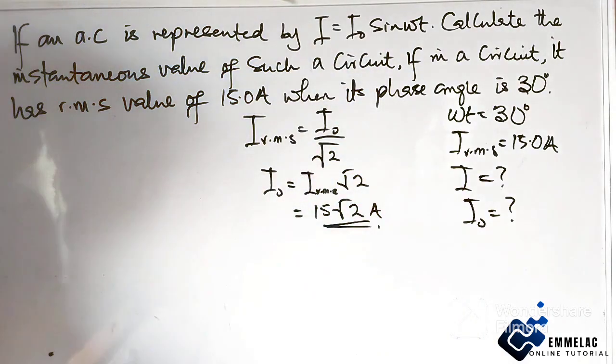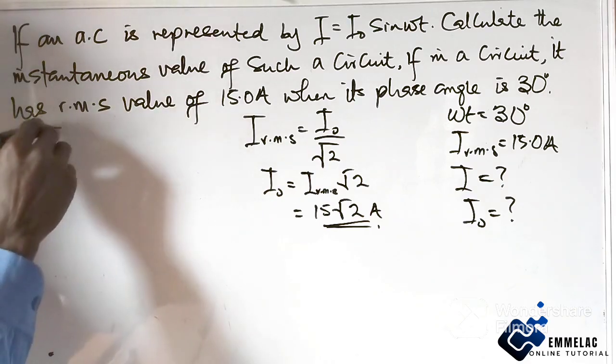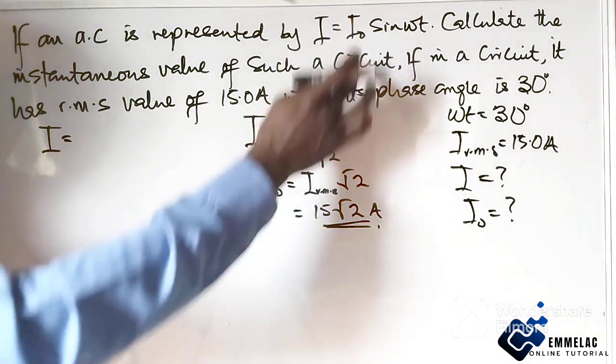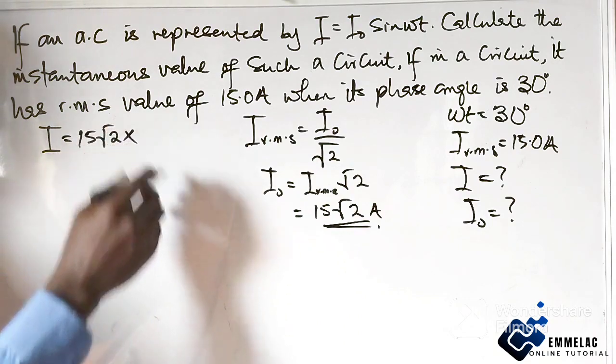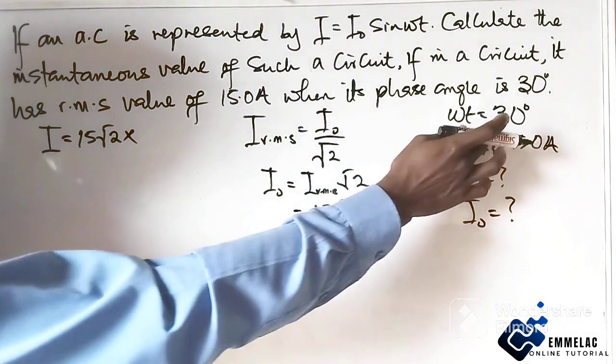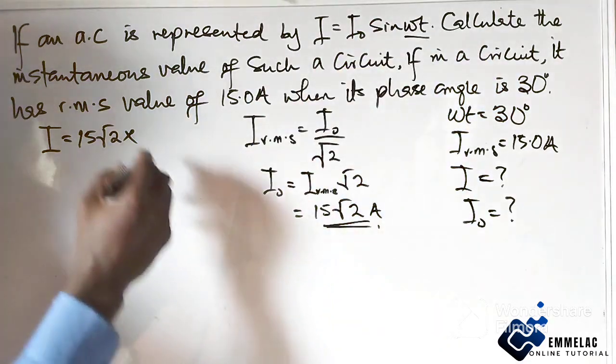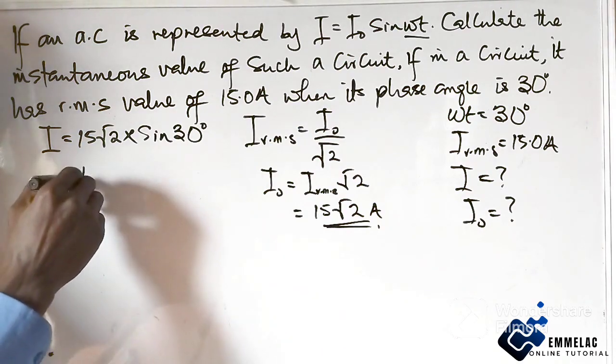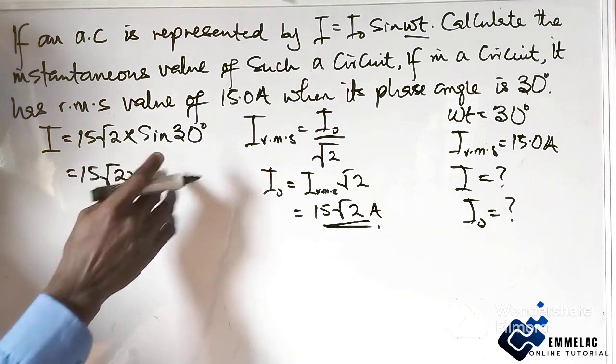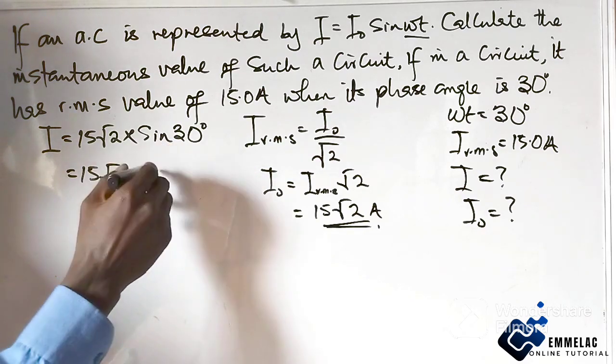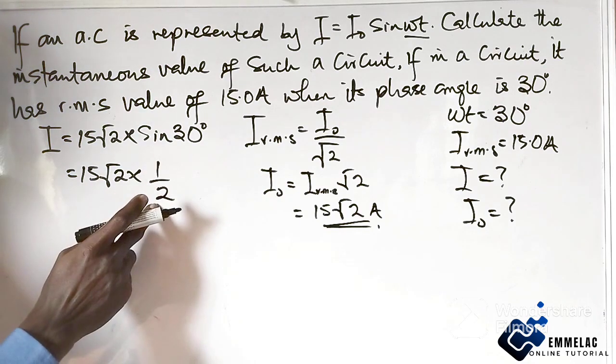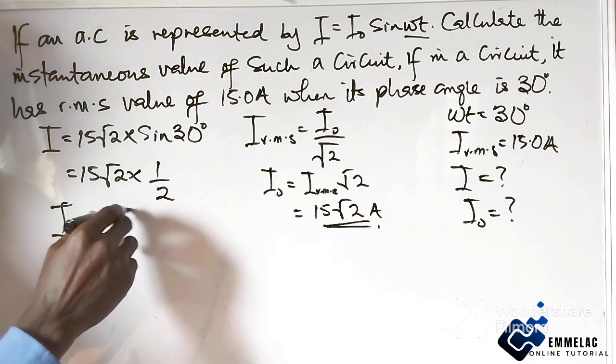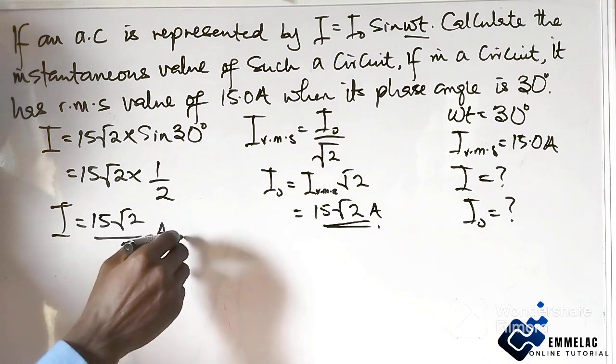So from here we come here. The peak value is given as this, now times the phase angle which is 30. So here I have sine 30 degrees. So here we know that 15 root 2 times this is 0.5, which is in fraction 1 over 2. So as such now our current will now give us 15 root 2 over 2 ampere.